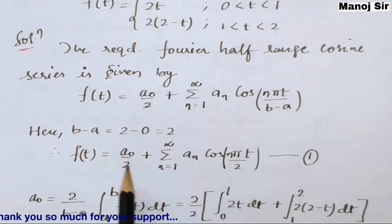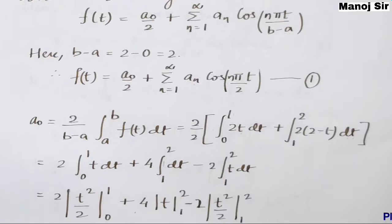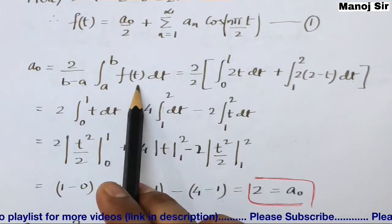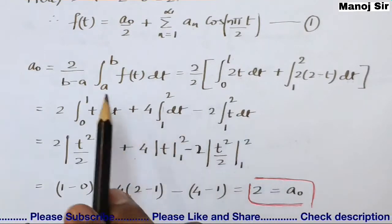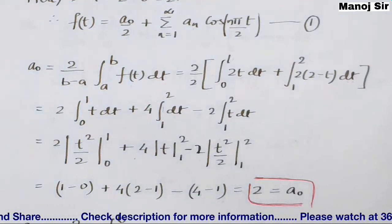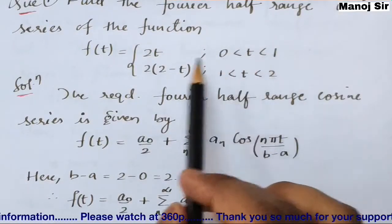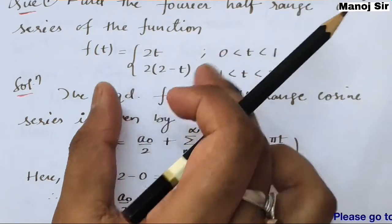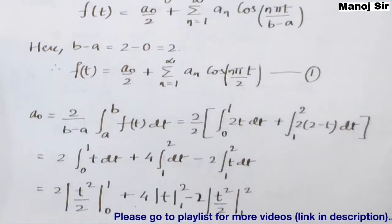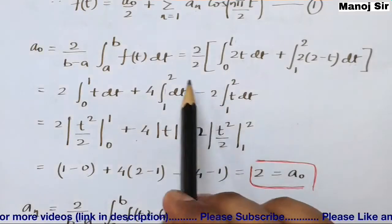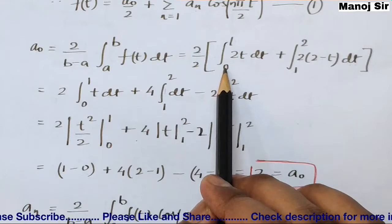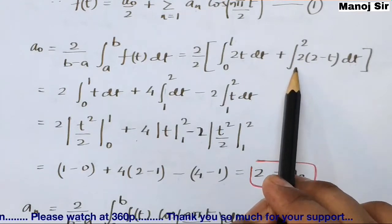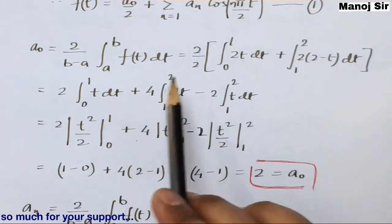Now we find a₀ and aₙ one by one. The formula for a₀ is (2/(b−a)) · integral from a to b of f(t) dt. Since b − a = 2, this becomes (2/2) times the integral. For 0 to 1, f(t) = 2t; for 1 to 2, f(t) = 2(2−t) = 4 − 2t. So a₀ = integral from 0 to 1 of 2t dt + integral from 1 to 2 of (4 − 2t) dt.